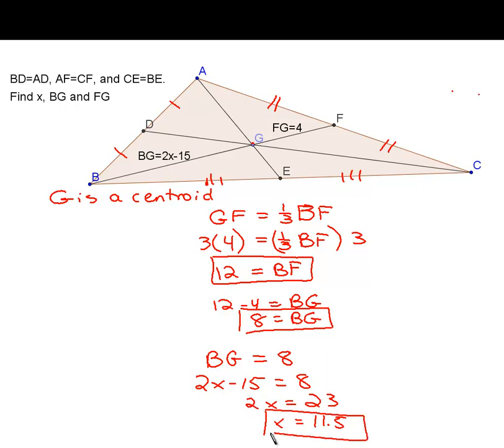So, we have solved for X, we have solved for BG, and we've solved for BF. FG is four that was given, so we've taken care of everything we need to solve for.